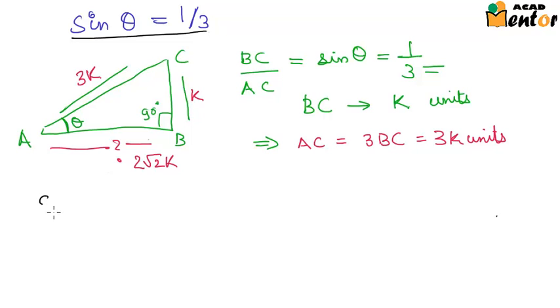Then we will find out cos theta. What was cos theta? The adjacent side or the base by hypotenuse, which is equal to AB by AC, that is 2 root 2k by 3k. And k gets cancelled, we have 2 root 2 by 3.